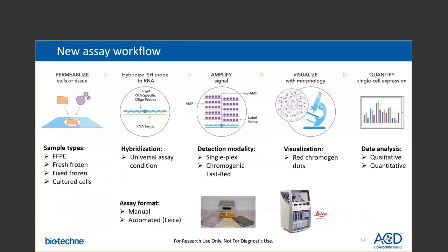Next, we'll focus on the new assay workflow. The new assay workflow is very similar to the RNAscope single-plex workflow for those of you familiar with our technology. First, the cells or tissue bound to a slide are permeabilized using ACD's ready-to-use pretreatment reagents. The new assay supports a variety of sample types, including FFPE, fresh frozen, fixed frozen, and cultured cells.